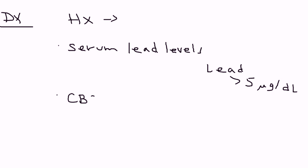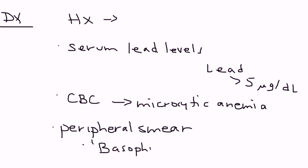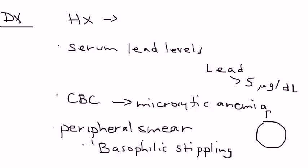Another test that's done is the CBC, which will show a microcytic anemia. A peripheral smear is also done and is beneficial in helping diagnose this, because you will see a finding known as basophilic stippling. Basically, you see these red blood cells and in the periphery you'll see these dots, which are essentially ribosomes. So the red blood cells will show small dots on the periphery — that's what basophilic stippling means.